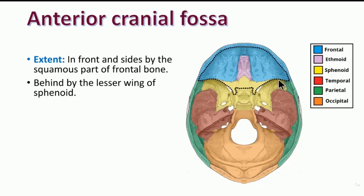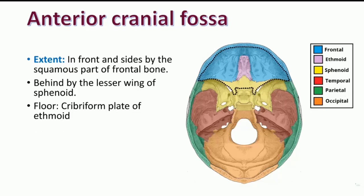The lesser wing of the sphenoid has a very sharp posterior margin — you can also call it the sphenoidal crest. The two lesser wings of the sphenoid are connected in between, and this bar of bone is actually called the jugum sphenoidale.